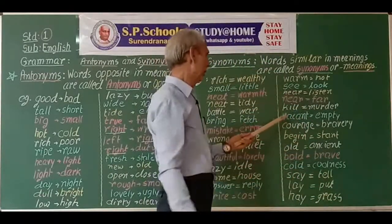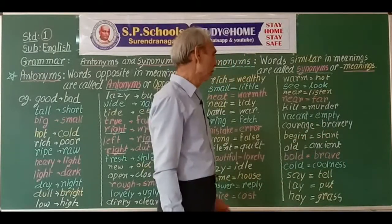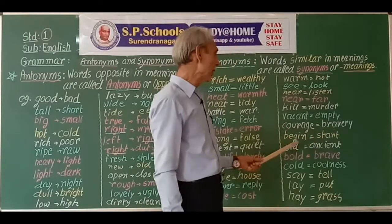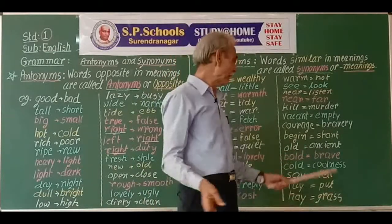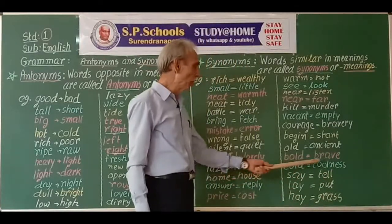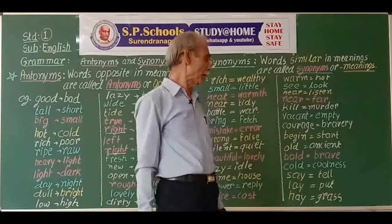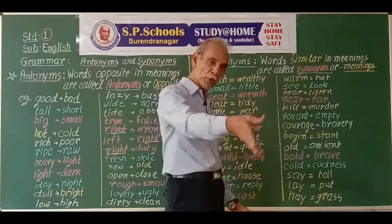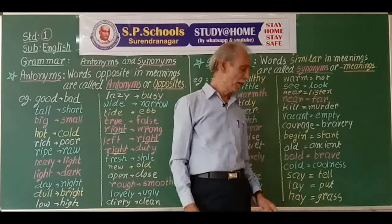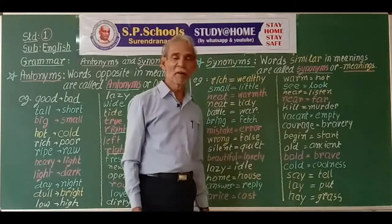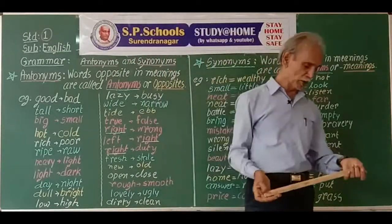Near and close are synonyms. Kill and murder are synonyms. Raise and bravery are synonyms. Begin and start are synonyms. Old and ancient are synonyms, but with a difference — old may be for two, three, or four years, while ancient is old for hundreds of years. Cold means coolness — ice is cold. Safe and secure are synonyms. Lay and put are synonyms. There is a saying in English: make hay while the sun shines — it means complete your work when you have the opportunity. These are all synonyms and antonyms.